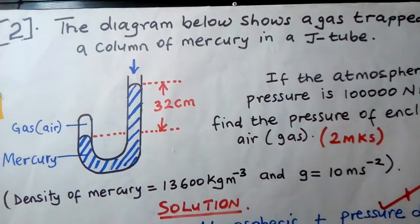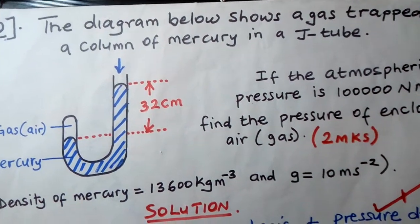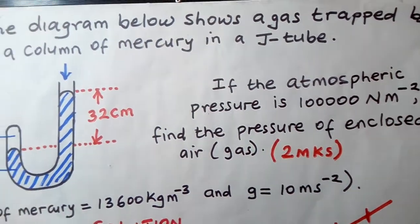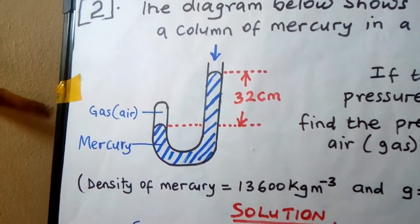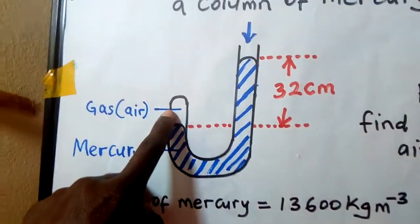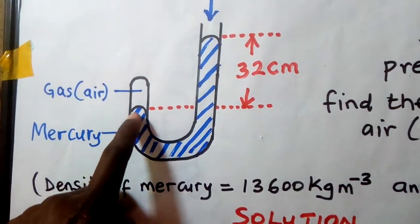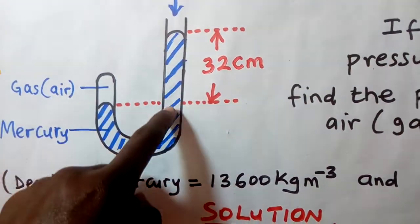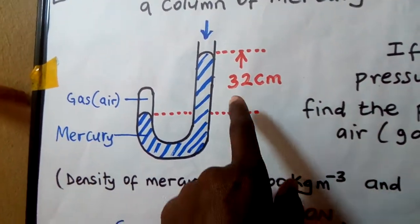Let's look at the second question, which is also related to the calculation of gas pressure. The diagram shows a gas trapped by a column of mercury in a J-tube. Looking at the diagram, you can see there is gas or air trapped here because it has nowhere to pass. There is mercury present, and the gas keeps pushing the mercury down, causing the mercury level to rise. The difference in height is 32 centimeters.